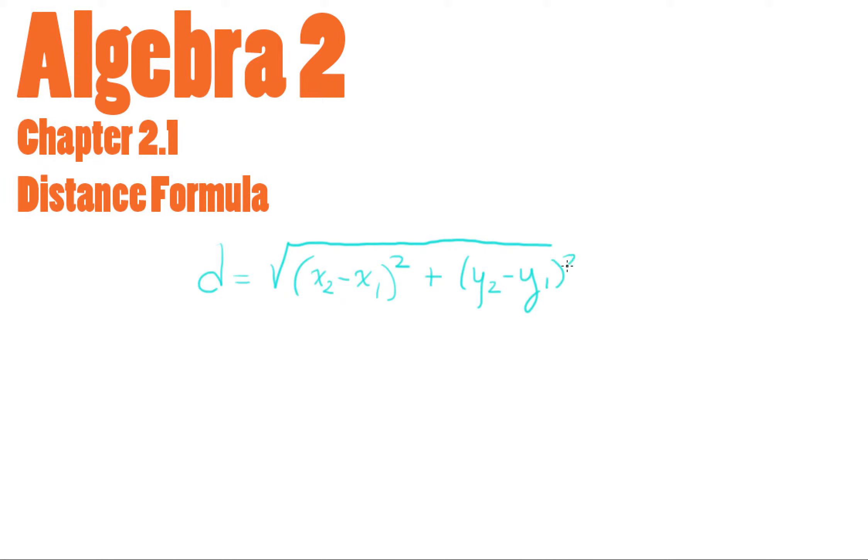Now a couple of details here. First of all, inside the parentheses is minus, outside is plus. x2 and x1, when I'm saying those two expressions, I'm talking about subscripts, not superscripts. So the 2 here is at the bottom of the x, not on the top.